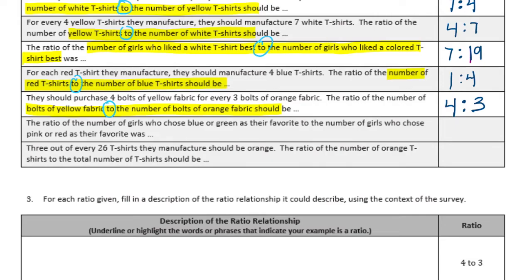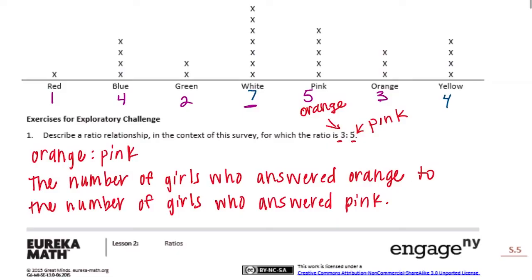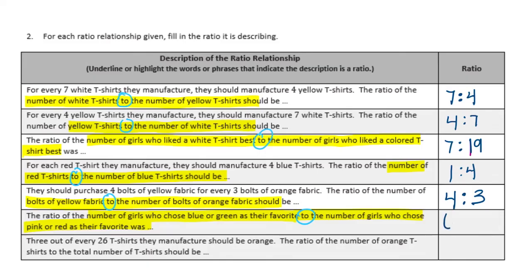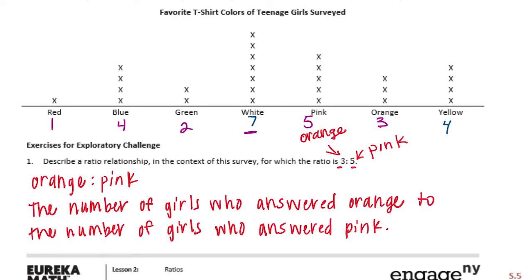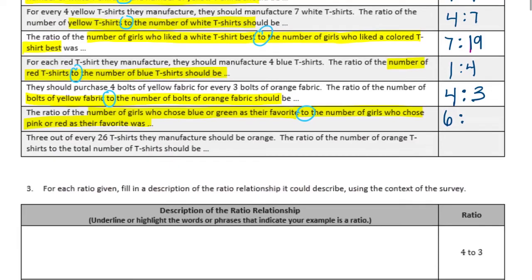The ratio of the number of girls who chose blue or green as their favorite to the number of girls who chose pink or red. Blue is 4, green is 2 — together that's 6. Pink is 5, red is 1 — that's also 6. So we have 6 to 6. Or if we wanted to reduce that, that's also 1 to 1. So for every 1 girl who wanted blue or green, 1 girl wanted pink or red.